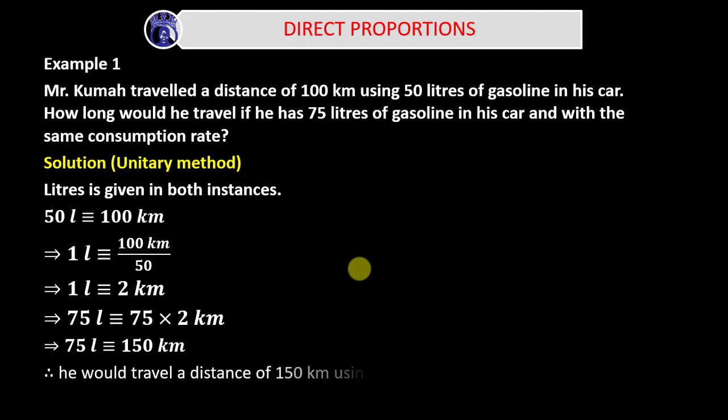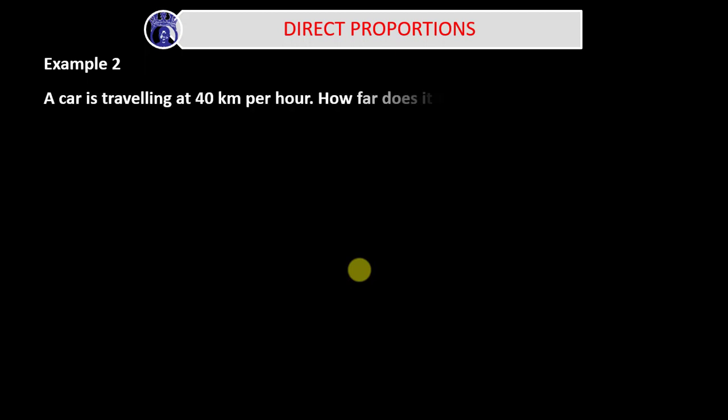Therefore, he would travel a distance of 150 kilometers using 75 liters of gasoline. I hope it's clear. Let's consider Example 2: a car is traveling at 40 kilometers per hour. How far does it travel in 2½ hours? Solution — let's start with the ratio method. 40 kilometers is equivalent to 1 hour, because the car is traveling at 40 kilometers per hour.